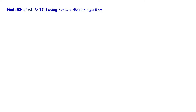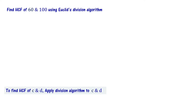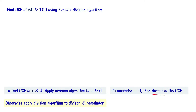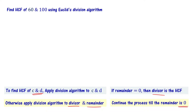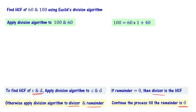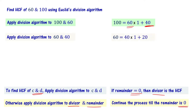Now let's look at one example. Find HCF of 160 using Euclid's division algorithm. Apply the division algorithm to the two numbers and see whether the remainder is 0 or not. If the remainder is 0, then the divisor is the HCF. Apply the algorithm to 100 and 60: 100 equals 60 times 1 plus 40. The remainder is 40, which is greater than 0.